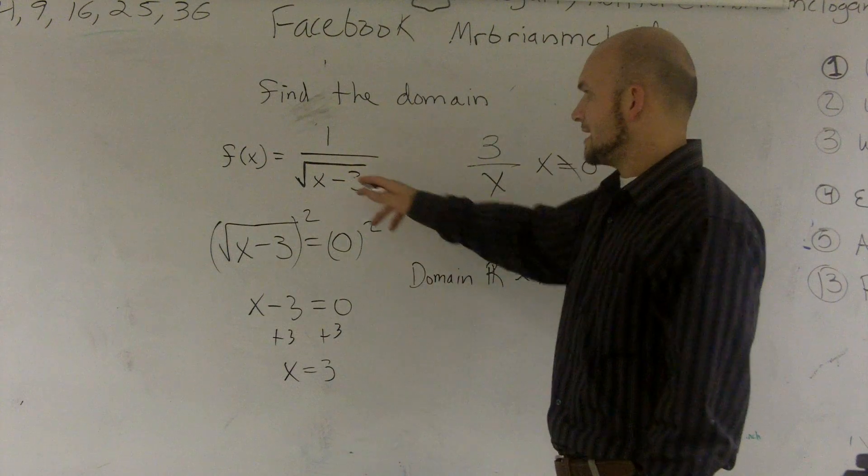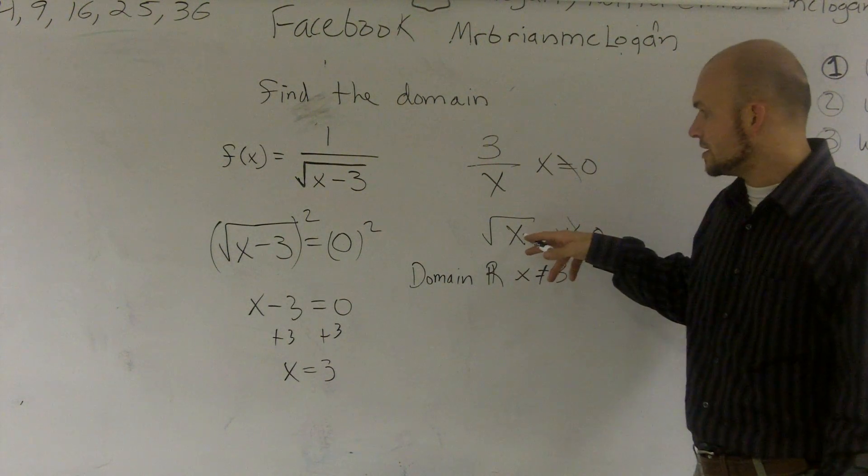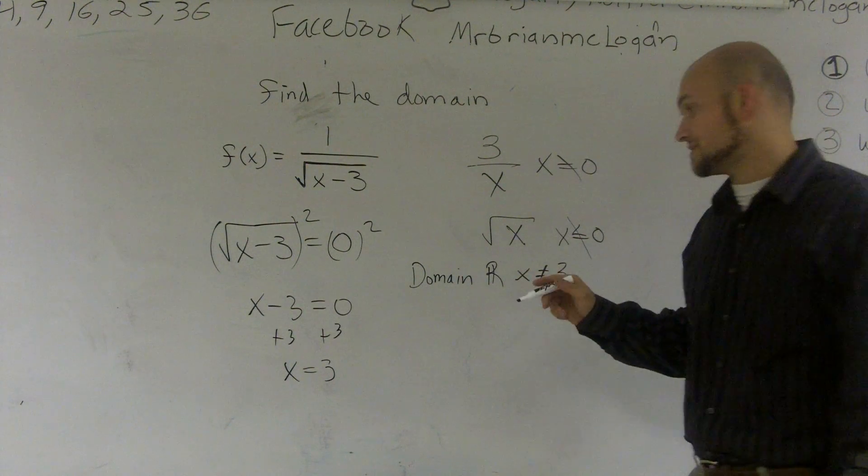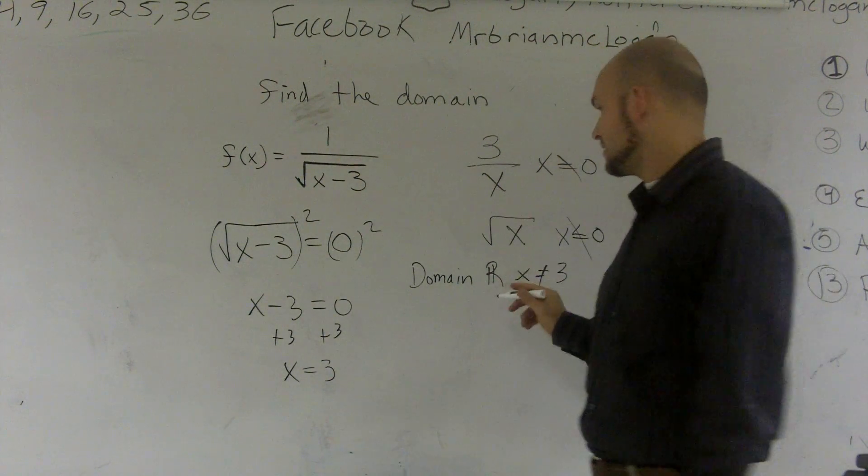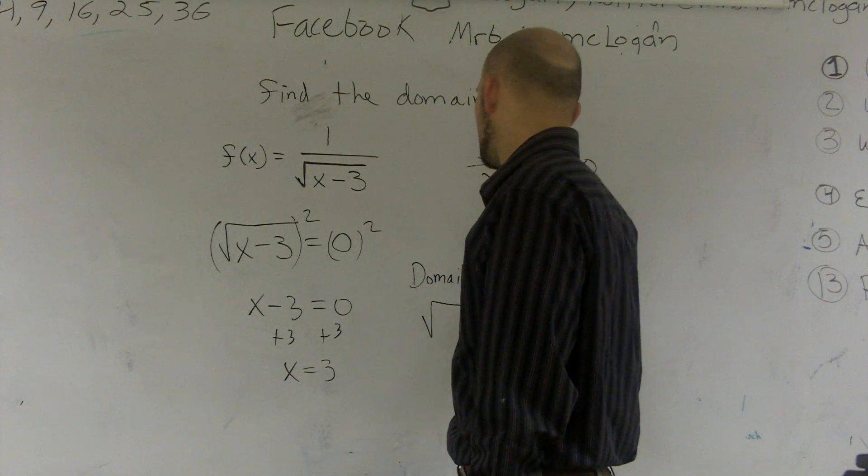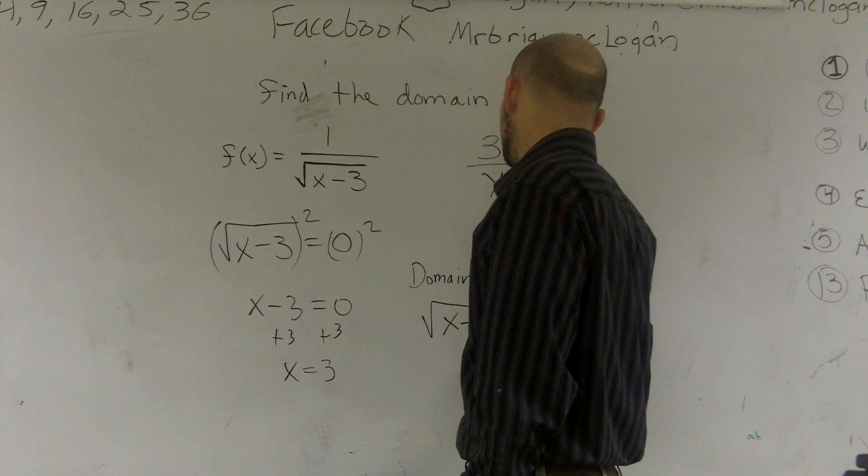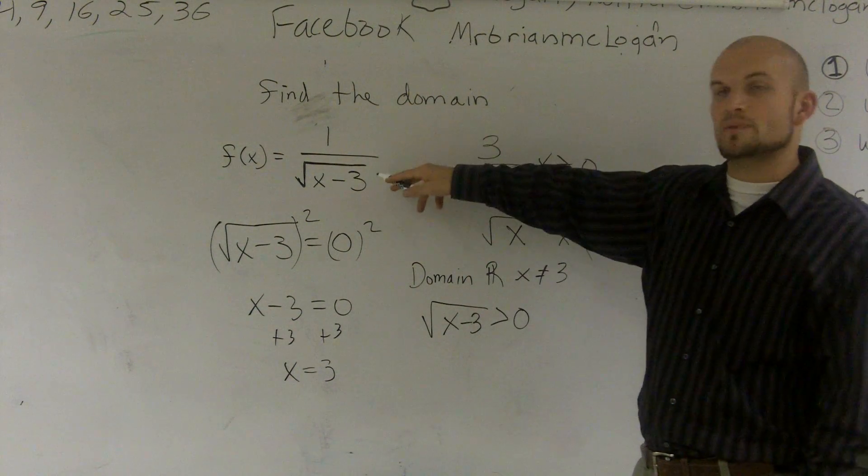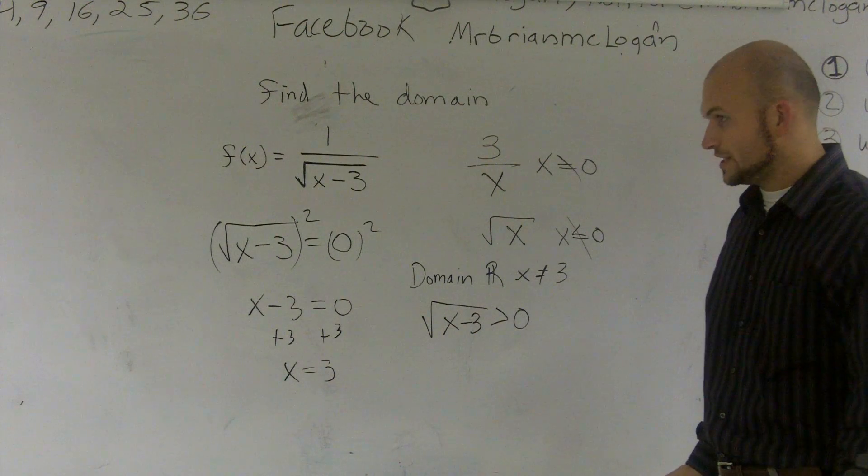Now, the next thing we need to look at is when we're looking at a radical, whatever's inside your radical has to be greater than or equal to 0. It can be equal to 0, except for this case, it's on the rational, so it can't be equal to 0. So I'm going to say the square root of x minus 3 has to be greater than 0. Usually it's greater than or equal to 0, but since it's on the bottom, it can't be equal to 0. So now we need to solve this inequality.